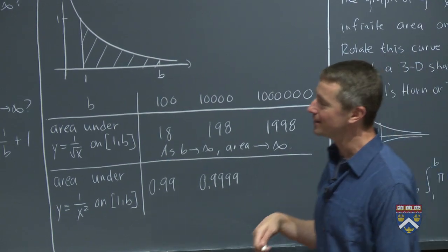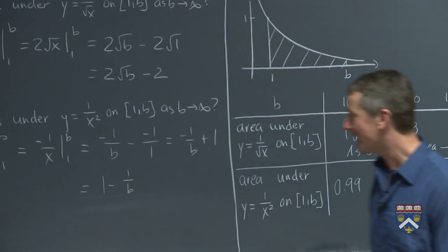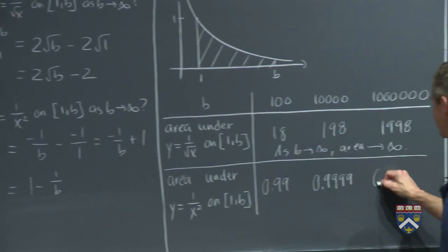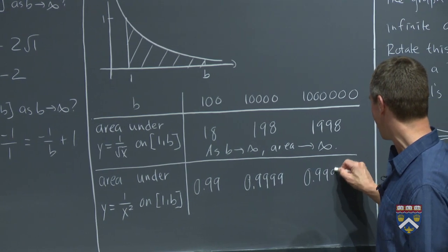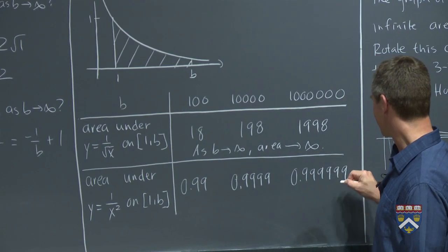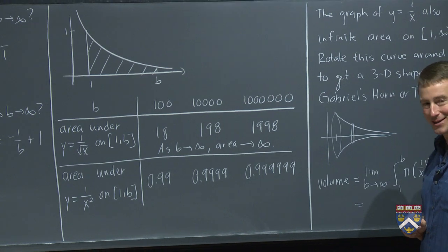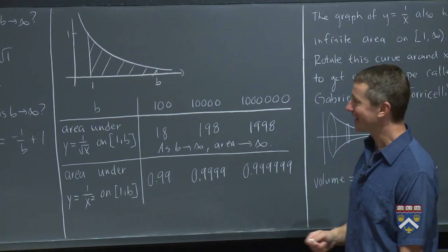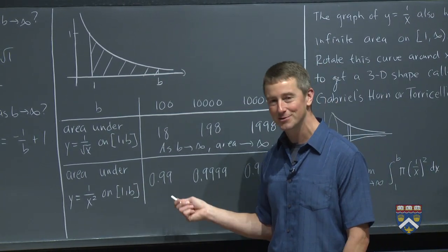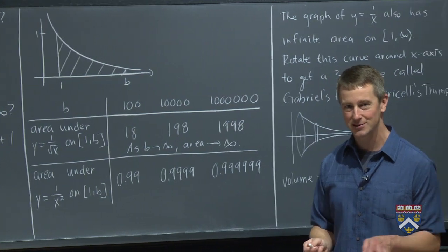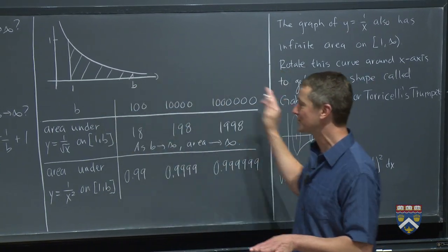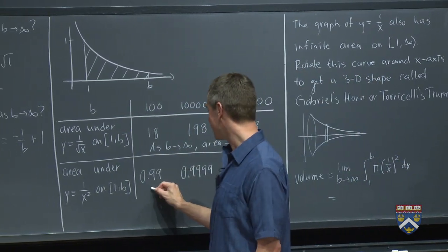And when we plug in 1,000,000, 1 minus 1 over 1,000,000 is 0, and then there should be six nines. So what does it look like? It looks like, in this case, as b goes off to infinity, as we imagine the shape extending forever off to the right, what happens to the area?